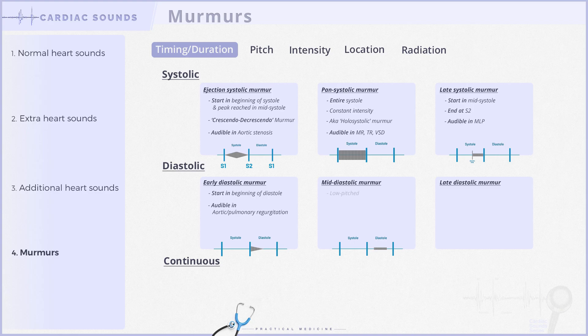Mid-diastolic murmurs are low-pitched, occurring during passive ventricular filling. They are caused by turbulent blood flow through a stenotic atrioventricular valve. They are often found in mitral stenosis and tricuspid stenosis, which is relatively rare.